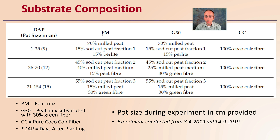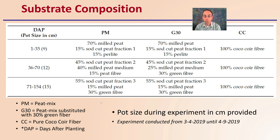PM stands for peat mix, G30 stands for peat mix substituted with 30% green fiber, and CC stands for pure coconut fiber. You're also seeing the abbreviation DAP, which stands for days after pollination. The pot size during the experiment in centimeters is provided here. These experiments were conducted between March 4th, 2019 to April 9th, 2019, and you can see the details of the components of each substrate.